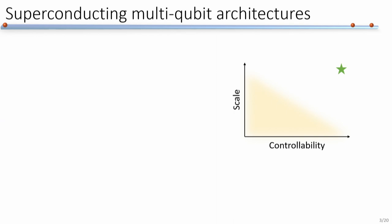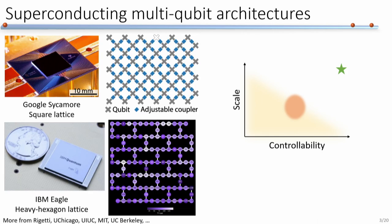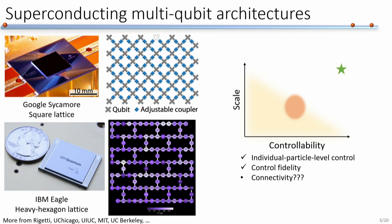Superconducting circuits are probably around this location on the chart. Big companies have been pushing qubit counts to larger scales — for example, IBM has more than 400 superconducting qubits on a single chip. In terms of controllability, superconducting qubits have reached very high individual particle level control, and gate fidelity has reached or even surpassed the surface code threshold. But in terms of connectivity, most multi-qubit architectures only have nearest-neighbor connectivity, and some are even sparser.